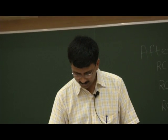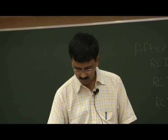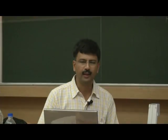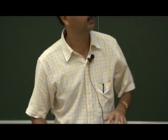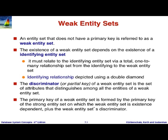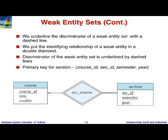Now let us move on to the second part of this thing, which is the other features of entity relationship diagrams. This is presentation part 2, the chapter is the same. So now let us add new features which are motivated by what some of the stuff we saw earlier. The first is the notion of a weak entity set. Let us start with an example and come back to some of the other stuff.